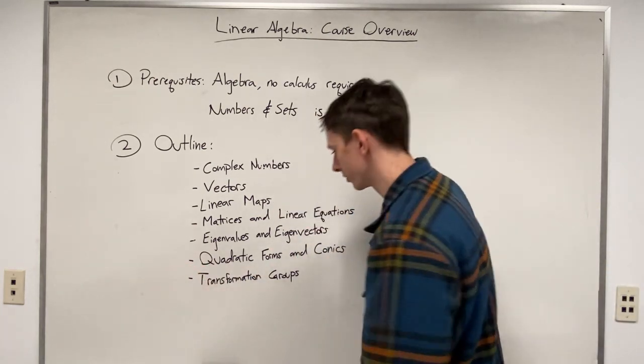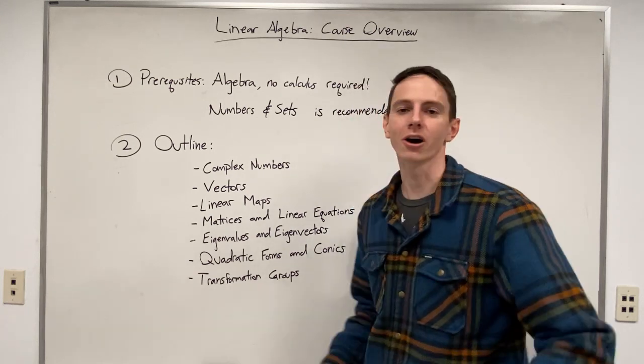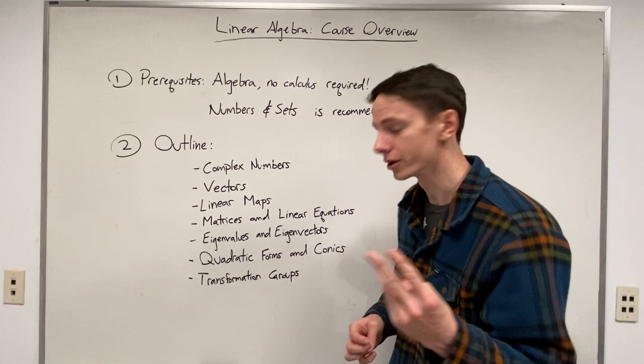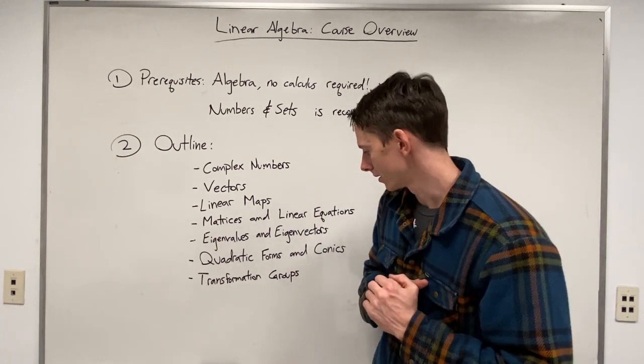And then finally, down here, we get to these things called transformation groups, where we're going to talk about the orthogonal group, the special orthogonal group, the Lorentz group, and things like these.